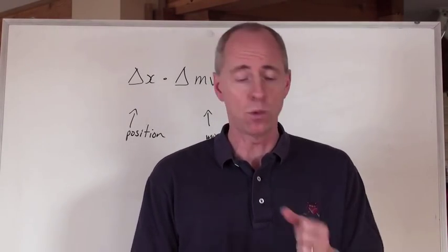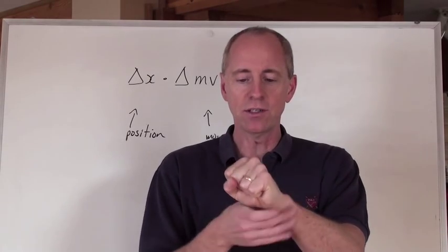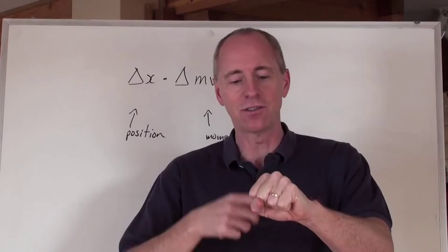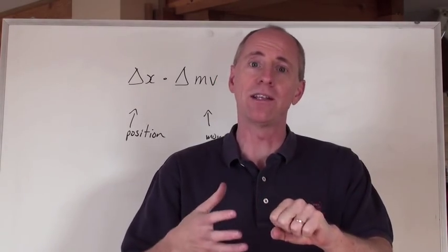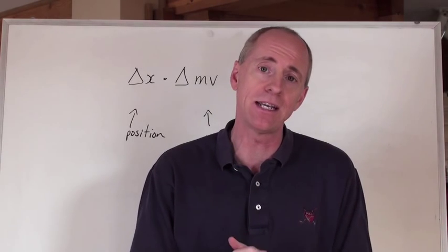So Bohr comes up with his model of an atom where the nucleus is just, it's called a planetary model, right? You have the nucleus and you might have the electrons going around the nucleus in certain orbits or rings. Those are those energy levels and those electrons could be found on there at any given time.